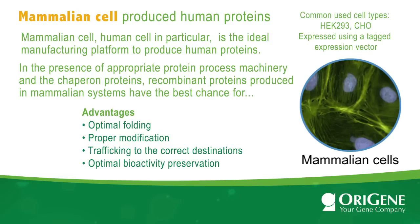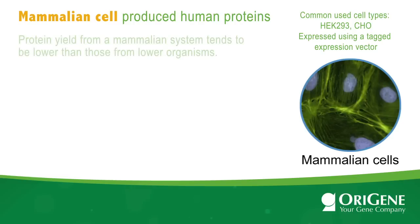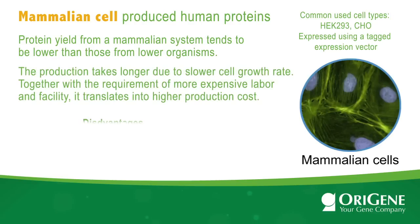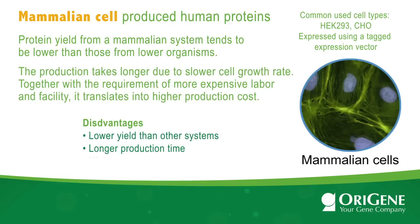This is especially important for membrane proteins, which are among the most studied proteins. Yet protein yield from a mammalian system tends to be lower than those from lower organisms. The production takes longer due to slower cell growth rates, and together with the requirement for more expensive labor and facilities, it translates into higher production cost.